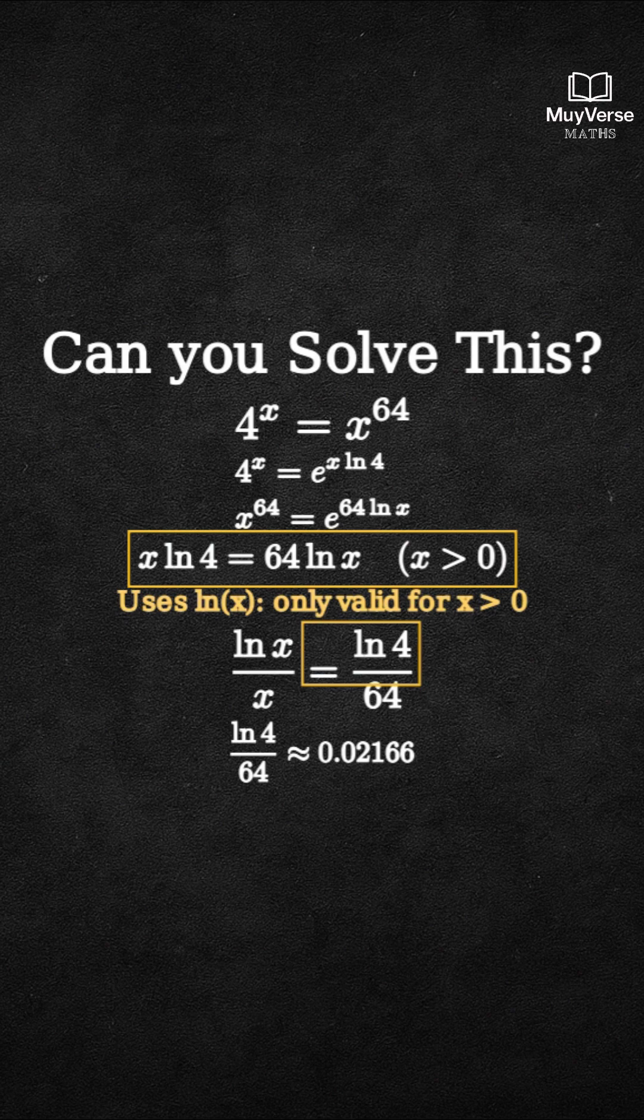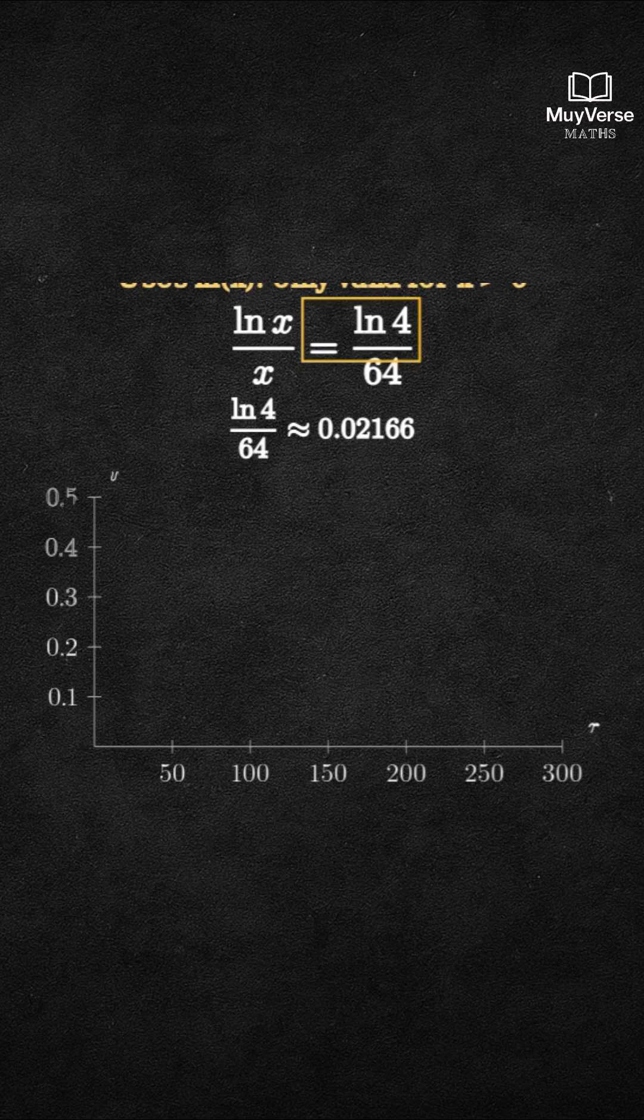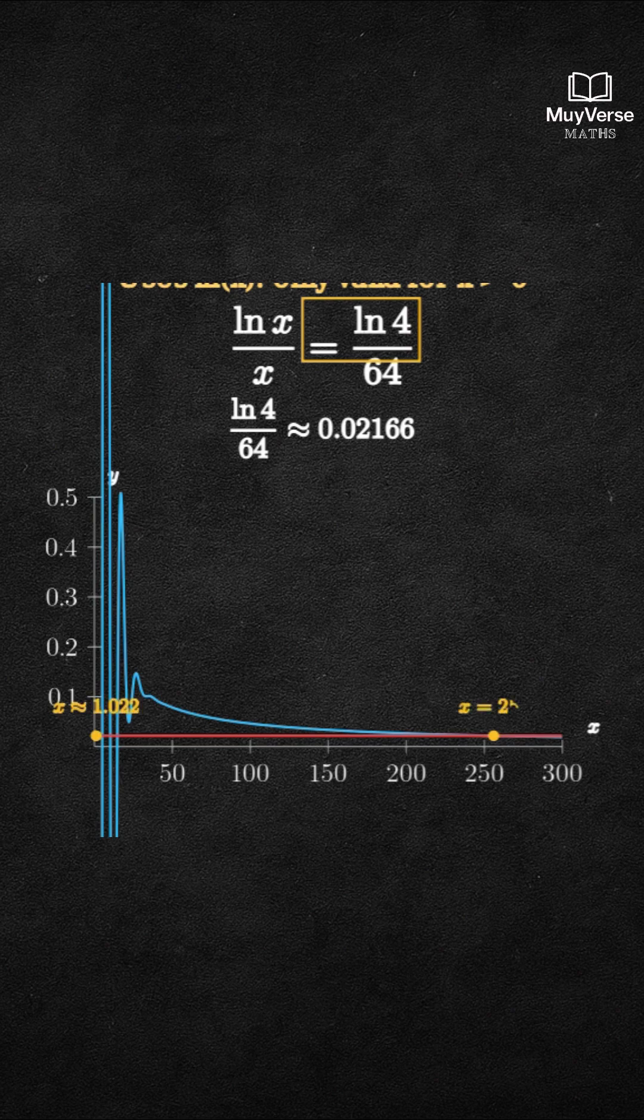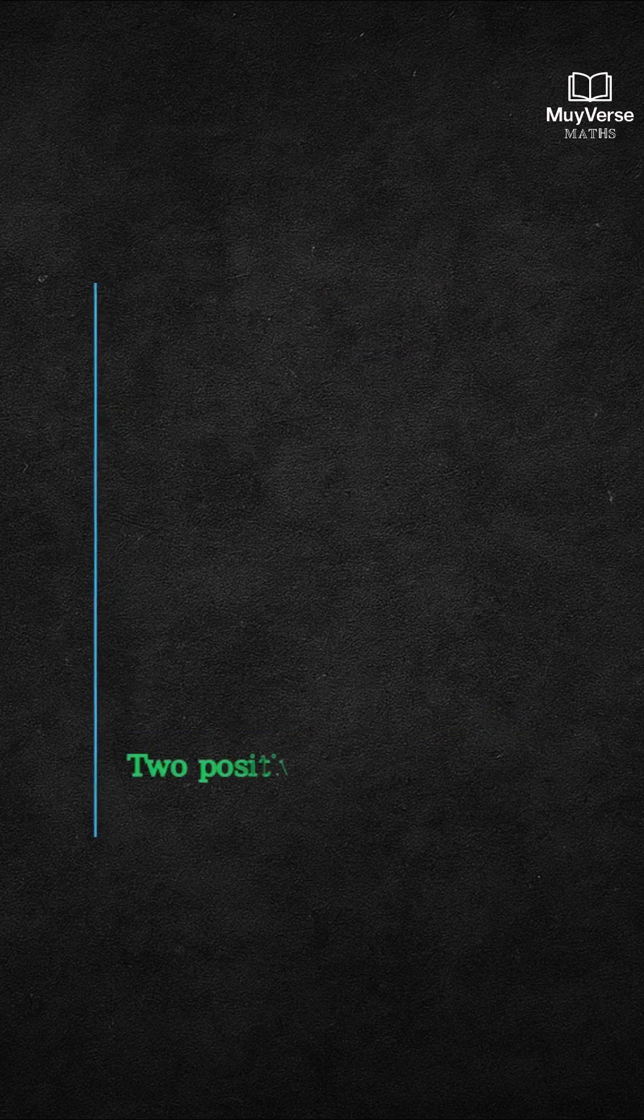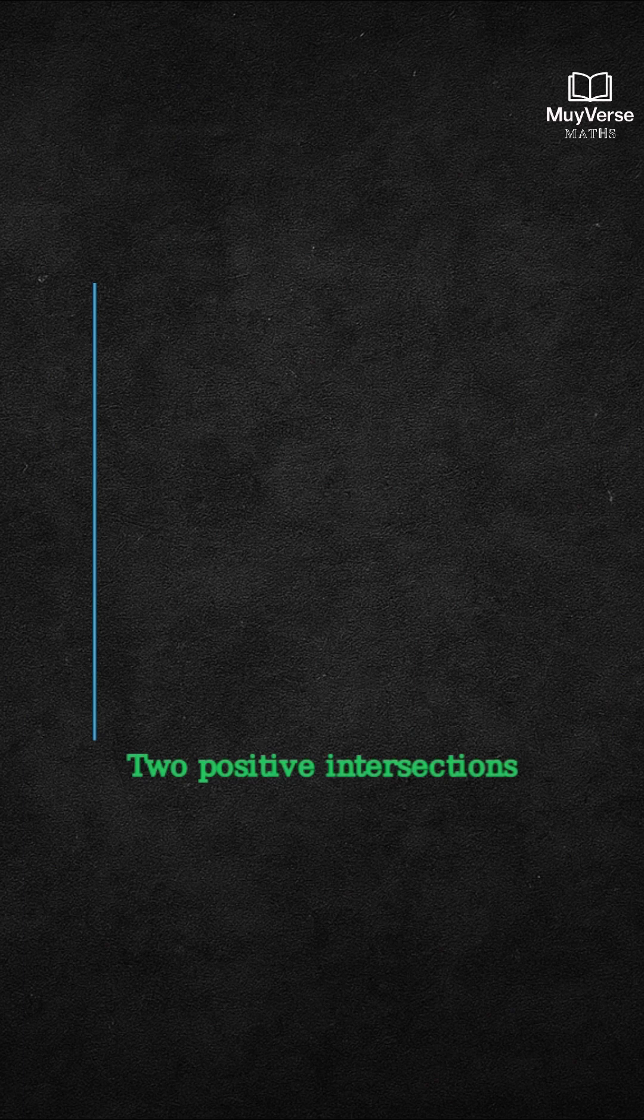Step 3. Visual cue. Plot the curve h(x) equals ln x divided by x for x positive, and the horizontal line y equals ln 4 over 64. There, intersections give the positive solutions. One small solution near 1, and a large solution which we will show is exactly 256.